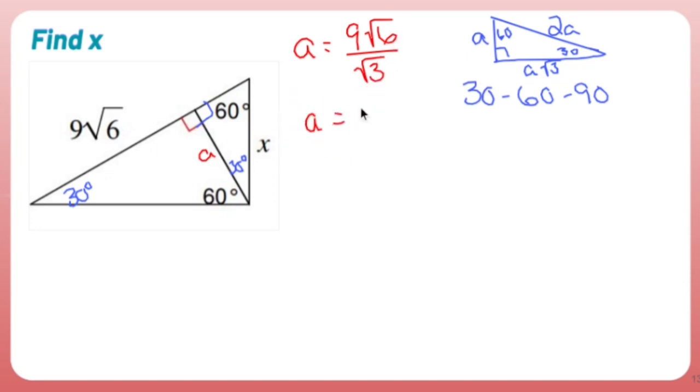So 6 over 3 inside the square root, 6 over 3 is 2. So that length right there is 9 root 2.